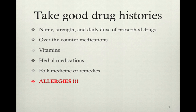First, take good drug histories. You need the name, strength, and daily dose of prescribed drugs, over-the-counter medications, vitamins, herbal medications, folk medicines and remedies, and allergies. You can learn a lot from someone's medical history just by looking at the drugs they're on. For example, if they're taking lisinopril and you look it up and find it's an ACE inhibitor for hypertension, you can start asking about hypertension. Some people don't think of themselves as having hypertension anymore after medication has corrected it, but they still have it in their medical history.